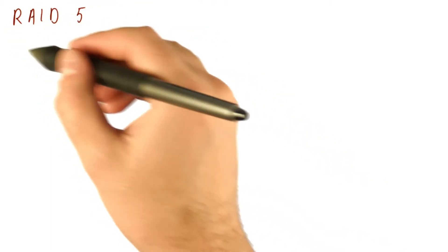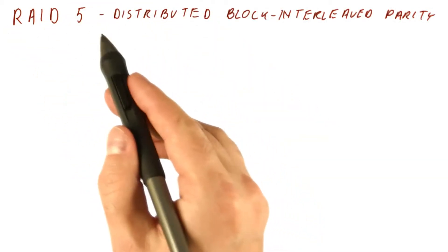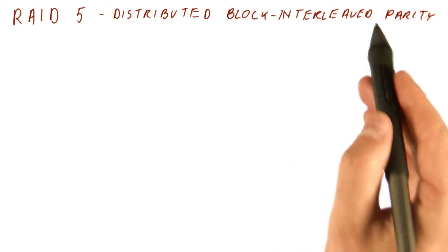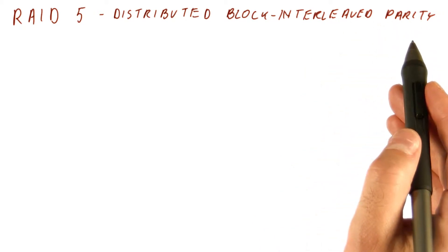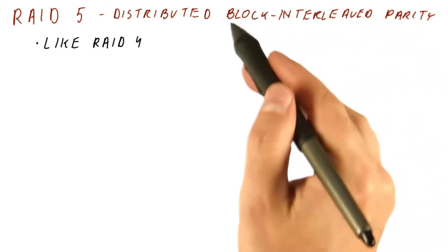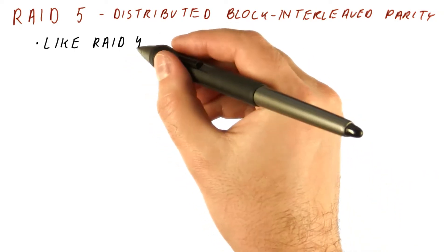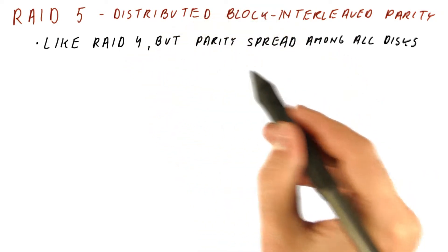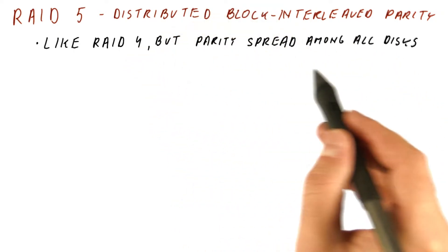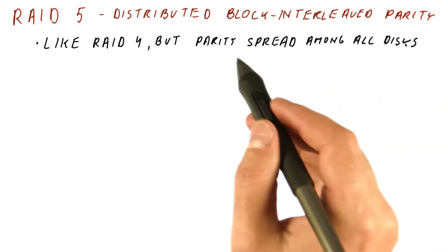And finally, let's talk about RAID 5, which uses a technique called distributed block interleaved parity to protect the disks. It does block interleaved parity just like RAID 4, but its parity is not all on the same disk — it is spread among all the disks.